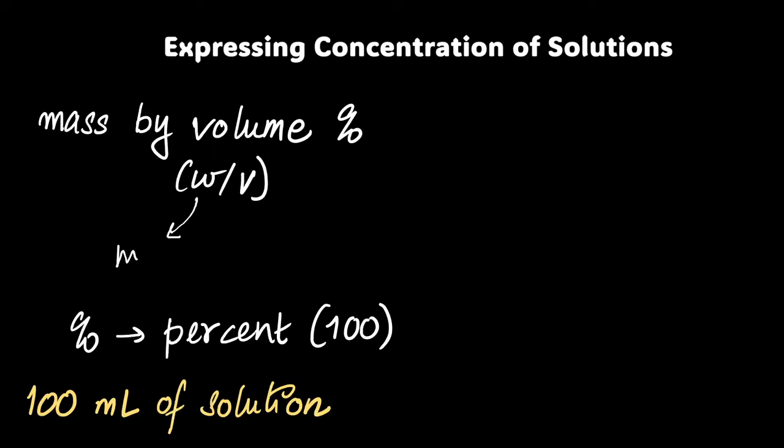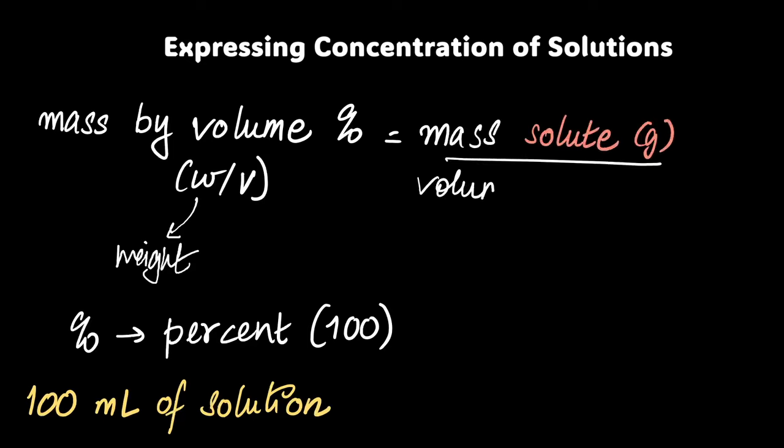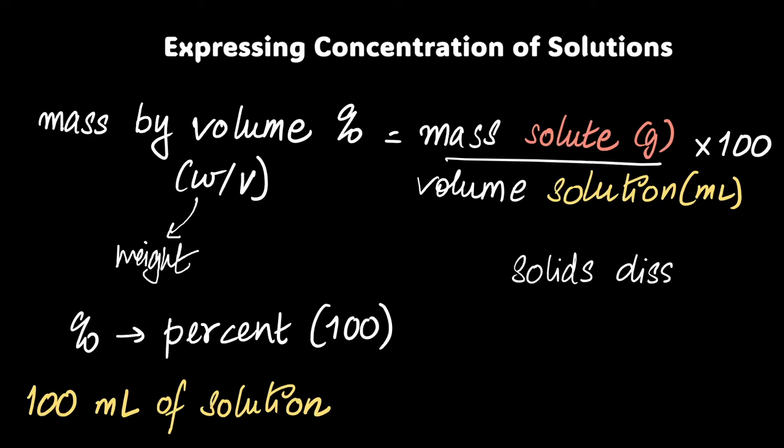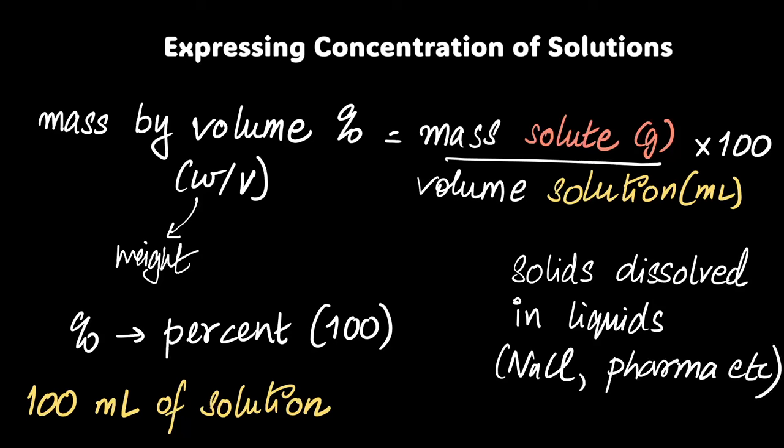In chemistry we use mass and weight interchangeably, that's why there's a w. The definition here: mass of solute in grams divided by volume of solution in mL multiplied with 100. I could also say it is the mass of solute in 100 mL of solution. Where is this useful? I feel personally that in a lab this is the most useful one. Usually you're dissolving solids in a liquid like NaCl or even in anything to do with pharmaceuticals. So this was a quick introduction to expressing concentration of solutions with three of these.